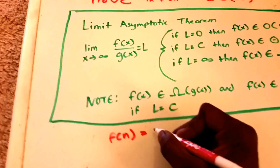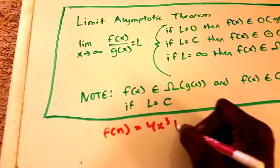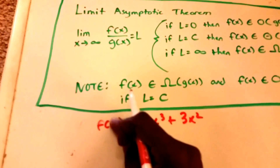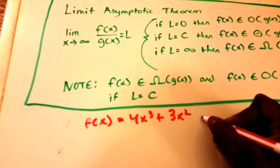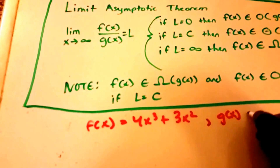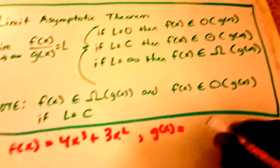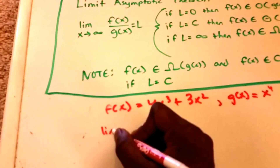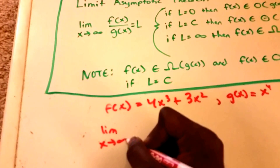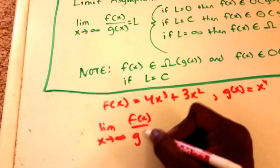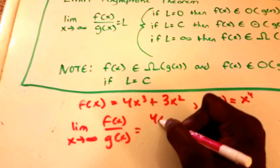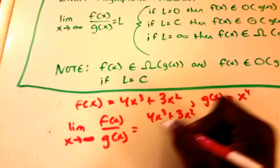Our f(x) is equal to 4x³ + 3x², and our g(x) is equal to x⁴. Using the limit rule, the limit as x approaches infinity of f(x) over g(x) is going to equal (4x³ + 3x²) over x⁴.